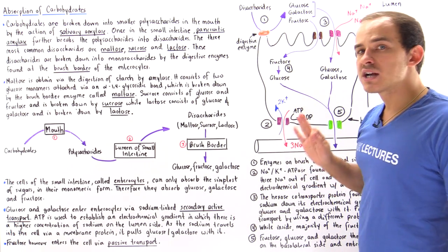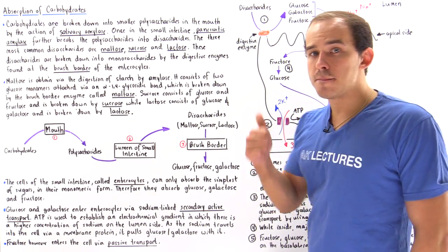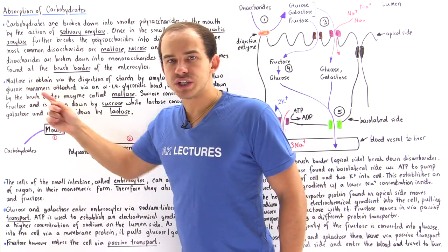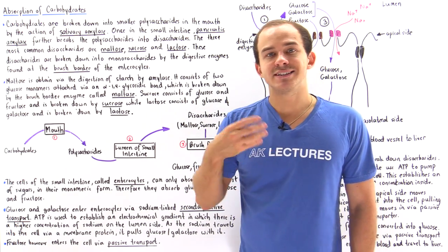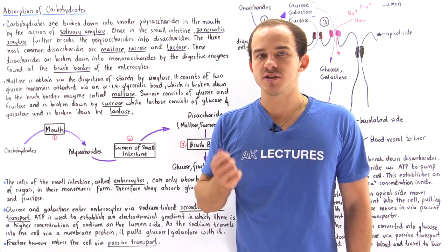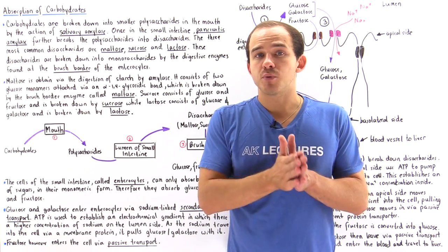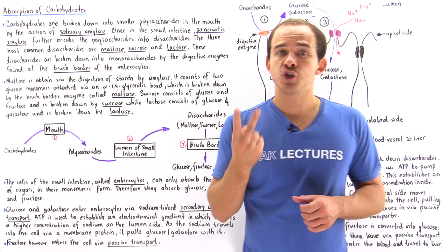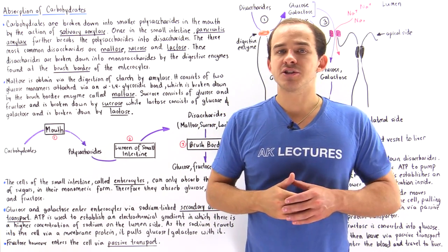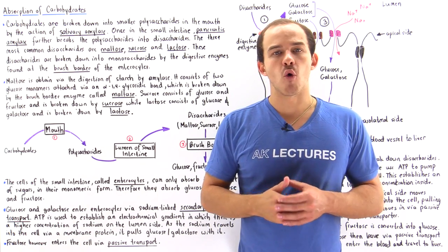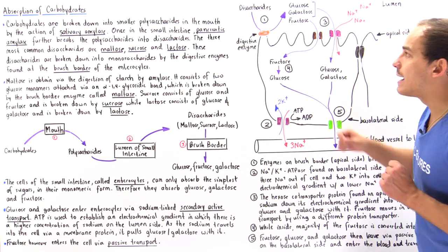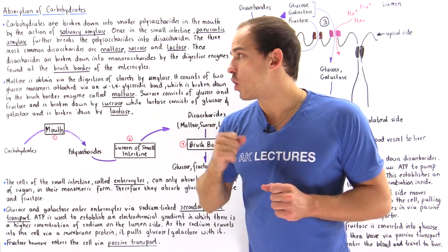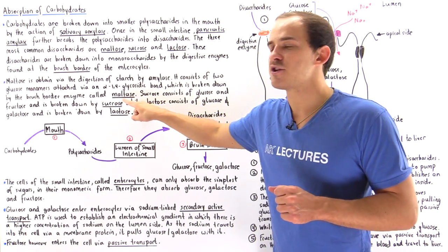The three most common disaccharides in the human body are maltose, sucrose, and lactose. Maltose is obtained by the digestion of the carbohydrate we call starch — our body breaks down starch into maltose. Maltose consists of two glucose molecules attached via an alpha-1,4 glycosidic bond, and the enzyme found on the brush border that breaks down maltose into two glucose molecules is known as maltase.